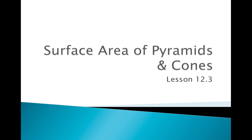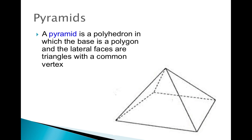First, let's figure out what exactly is a pyramid. A pyramid is a polyhedron in which the base is a polygon and the lateral faces are triangles with a common vertex. We've got a pyramid in the bottom right-hand corner and we're going to label everything we can about this pyramid based on the definition.